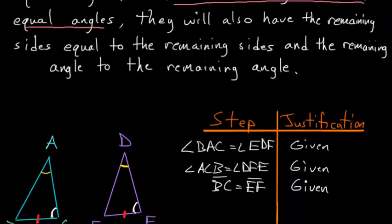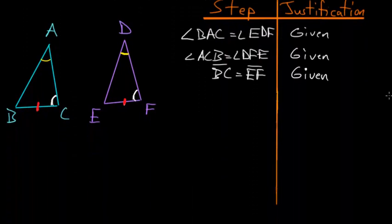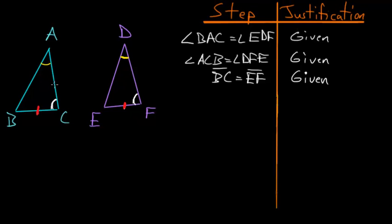So let's look at these two triangles, triangle ABC and DEF. This is essentially trying to prove the angle-angle-side theorem because we know the angles BAC and EDF are equal, ACB and DFE are equal, and the base BC is equal to the base EF.